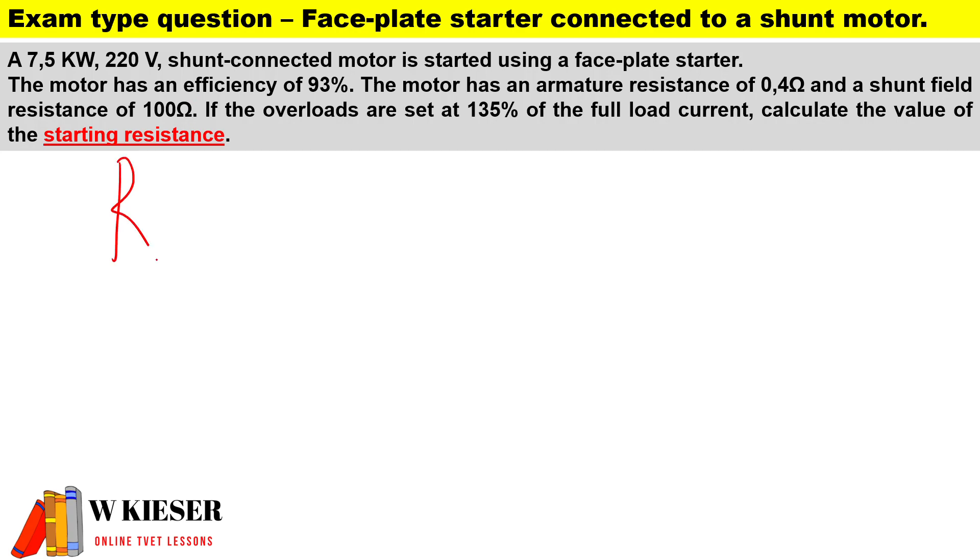To calculate R_start, it'll be the terminal voltage over I_a_max, so the maximum armature current that the armature will experience, minus R_a. We're going to have to calculate R_start using this formula.